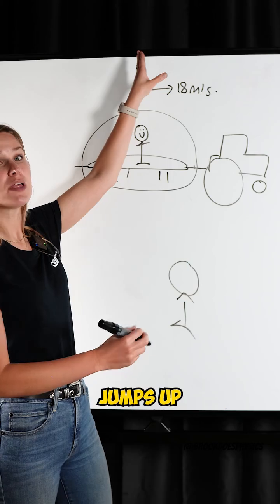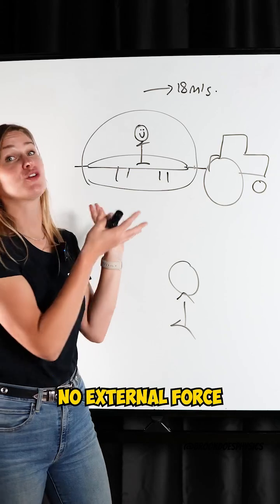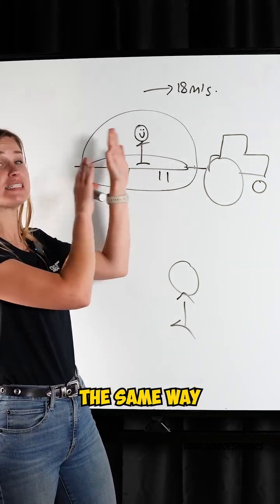But inertia tells us because there's no external force being applied, when the person jumps up, they keep moving the same way they were before. They keep moving at 18 meters per second forward with the tractor.